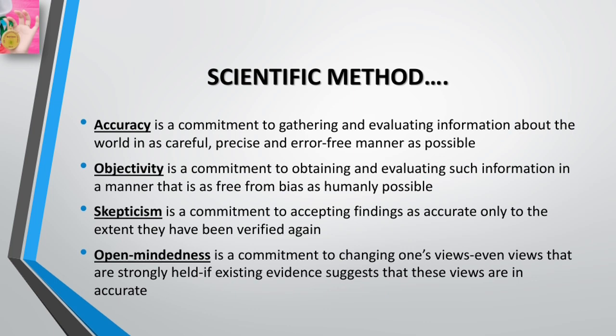We will focus on the core values that all fields must adopt to be considered scientific in nature. Four of these are most important. Accuracy is a commitment to gathering and evaluating information about the world in as careful, precise, and error-free a manner as possible. Objectivity is a commitment to obtaining and evaluating such information in a manner that is free from bias as humanly possible. Skepticism is a commitment to accepting findings as accurate only to the extent that they have been verified.